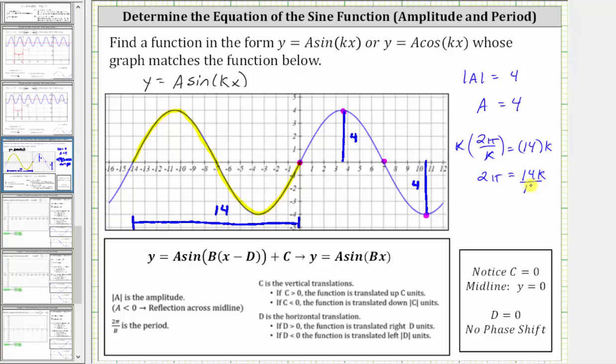To solve for k, we divide both sides by 14. Simplifying, we get k equals two pi over fourteen, which simplifies to pi over seven.